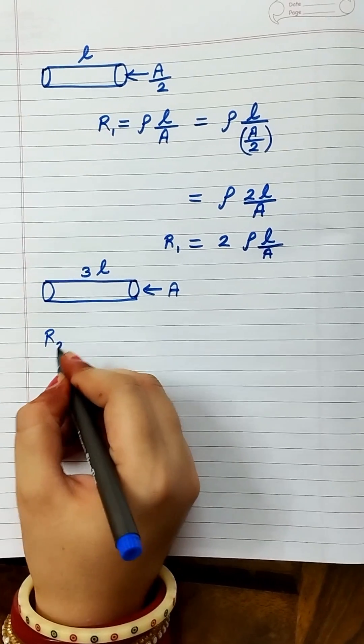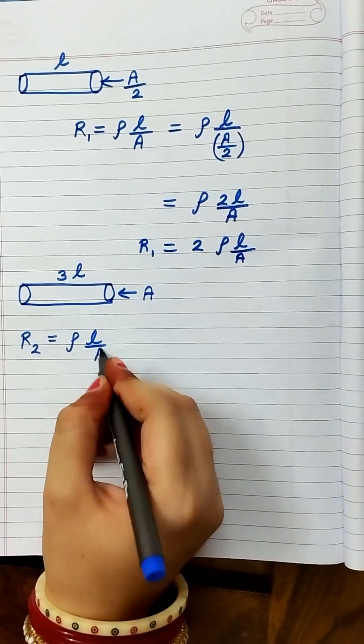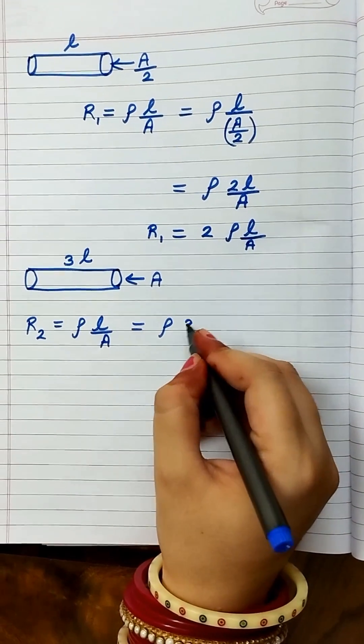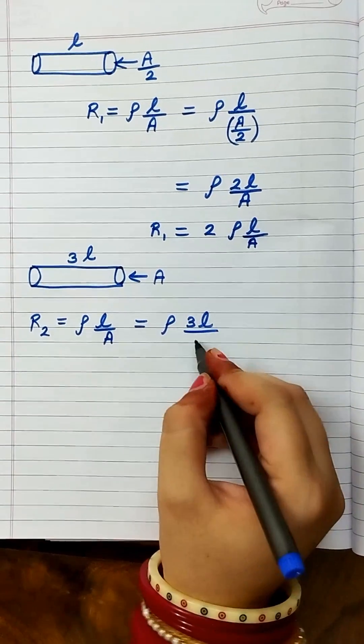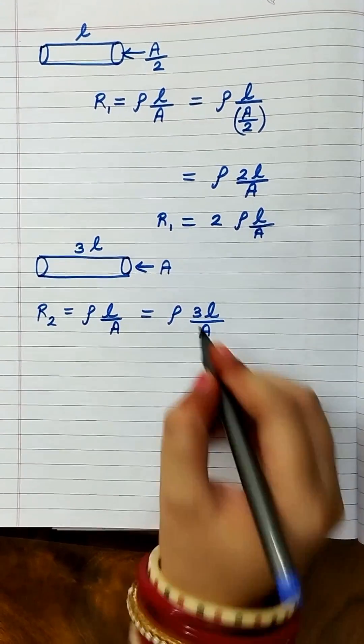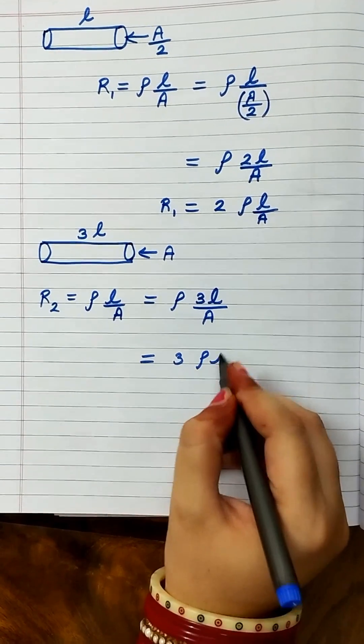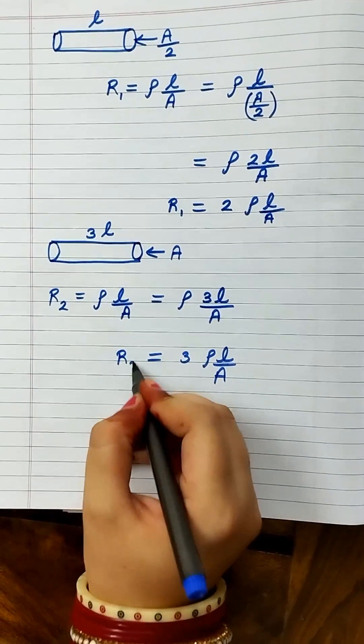So I can write R2 equals ρL/A. Rho remains the same, the length is 3L, and the area is A. I can rewrite this as R2 equals 3ρL/A.